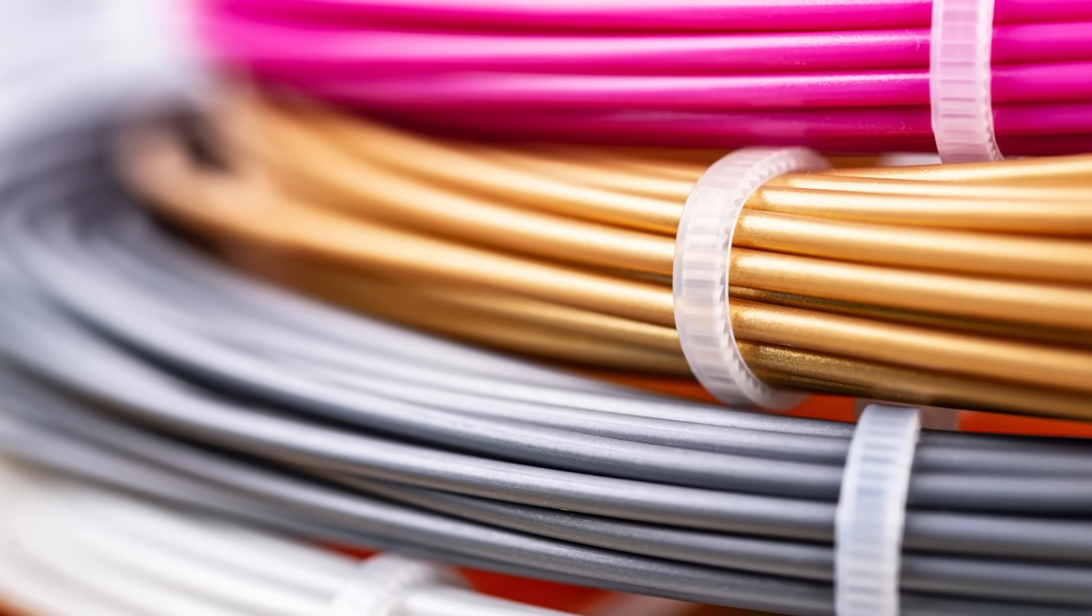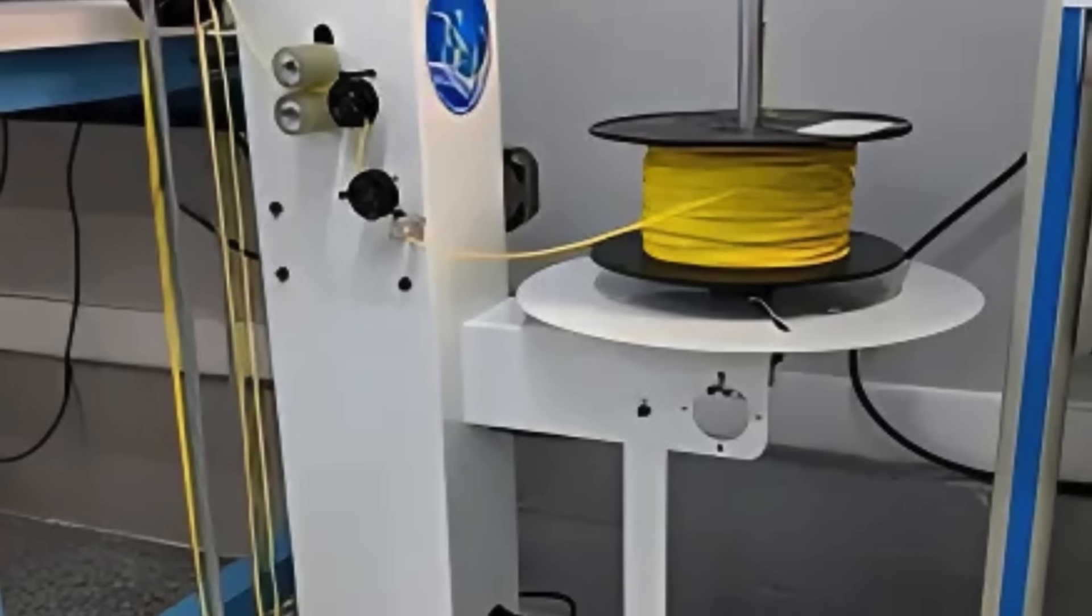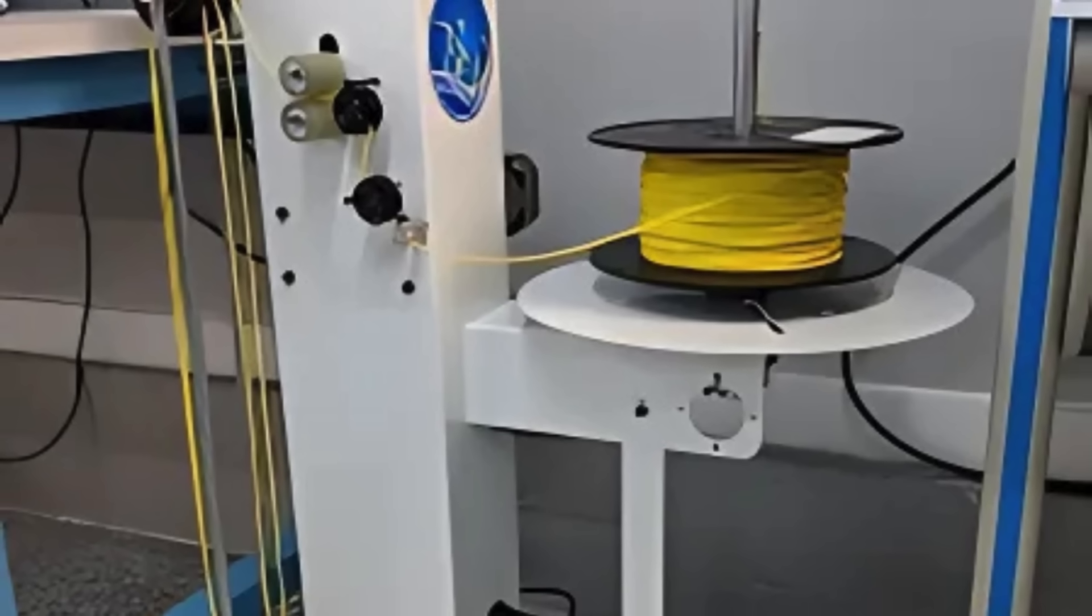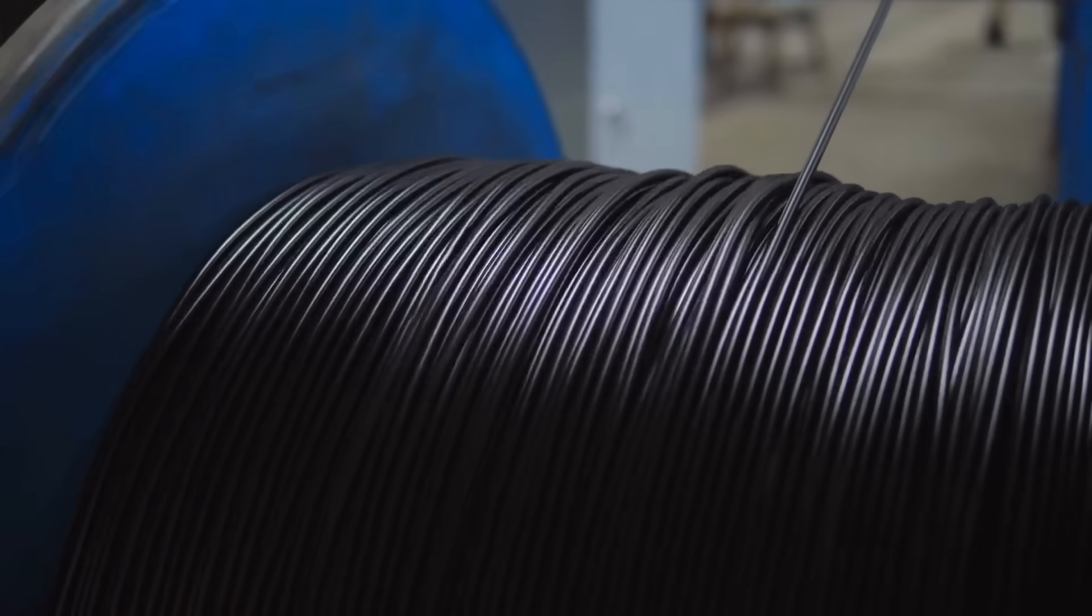Once the wires pass quality control, they are prepared for distribution. This often involves cutting the wires into specified lengths and winding them onto spools or reels for easy transport and storage.